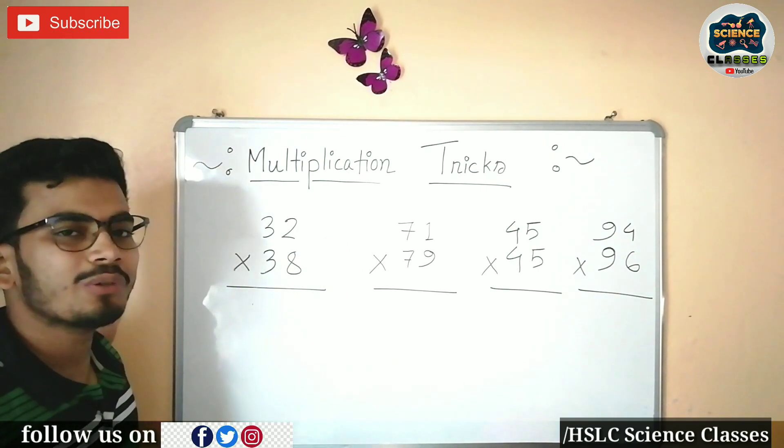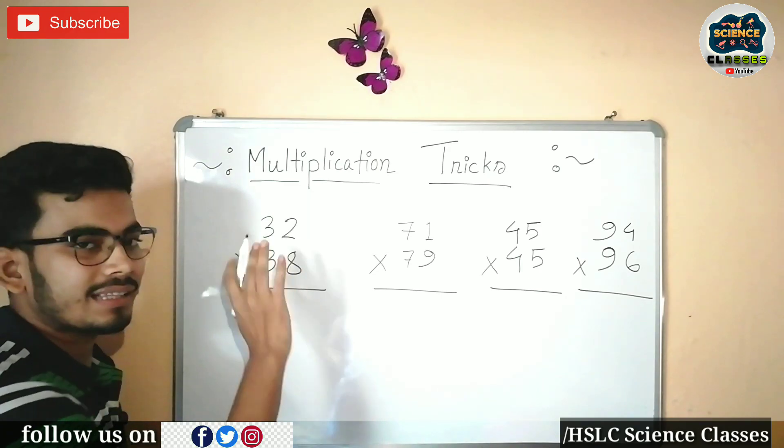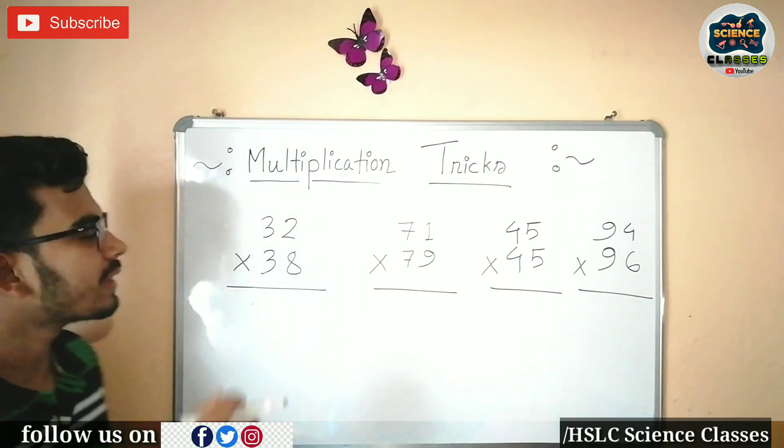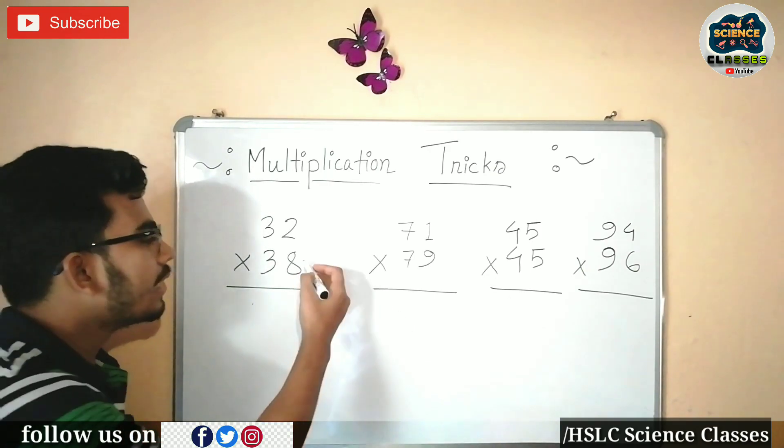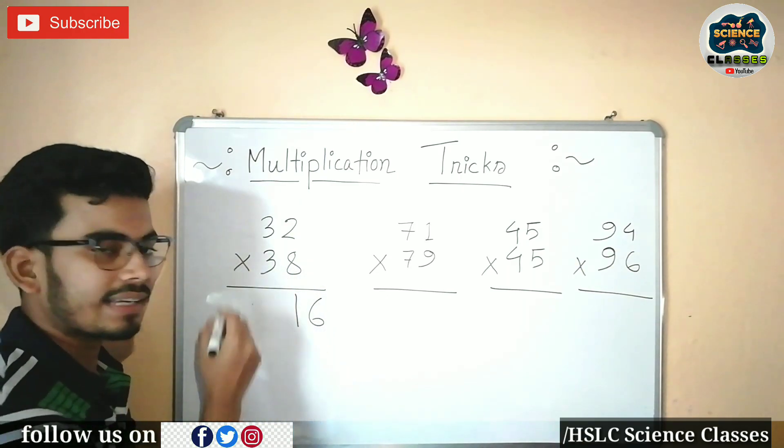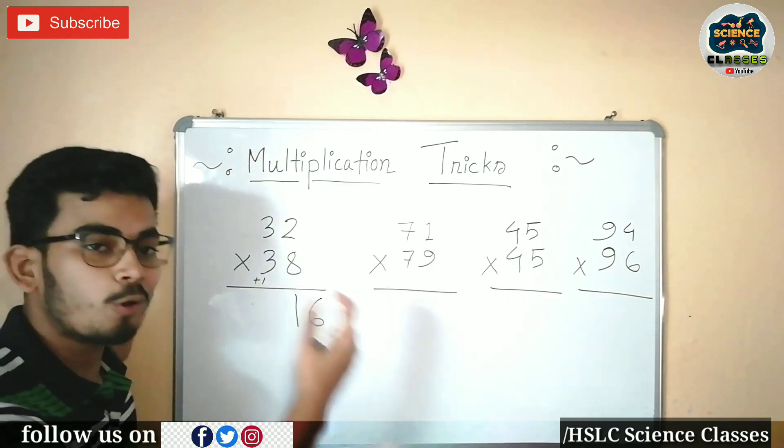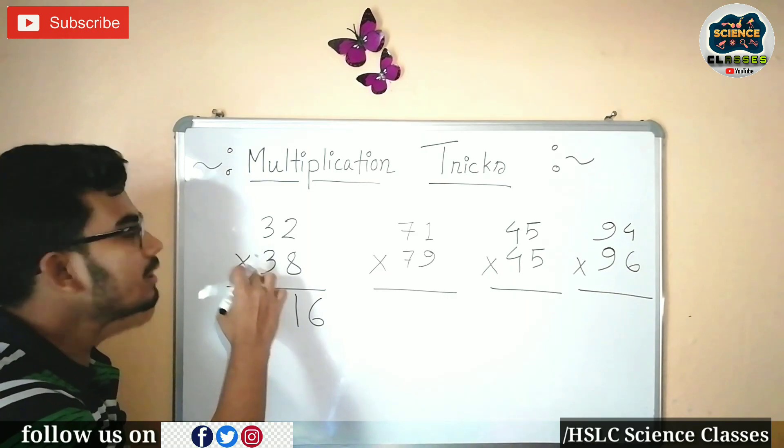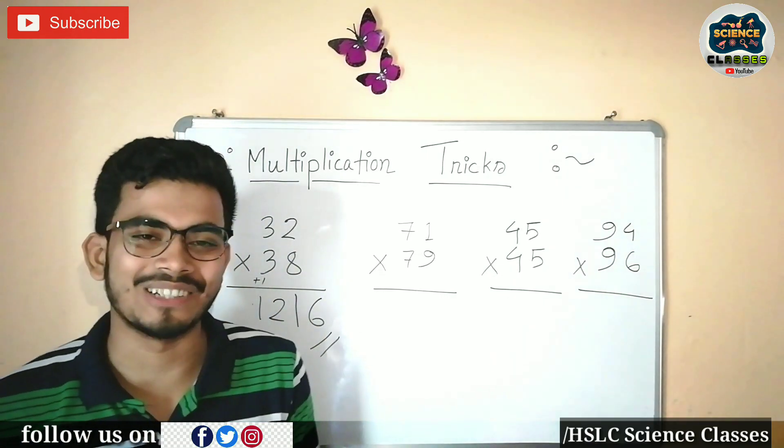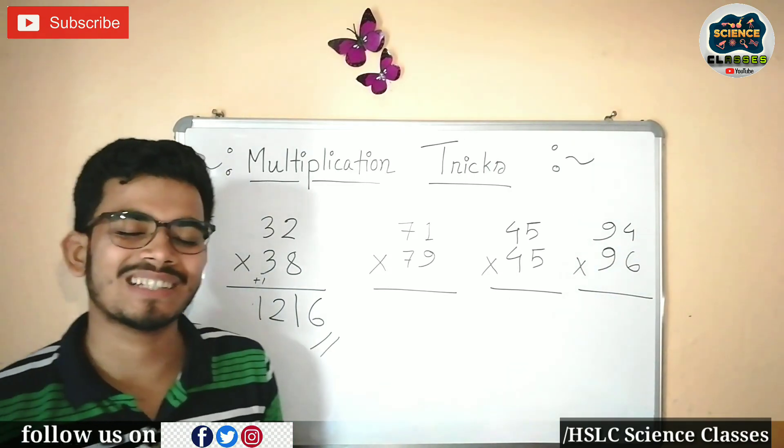The first question is 32 times 38. This is 1, then 3 times 4 equals 12. So the answer is 1216.